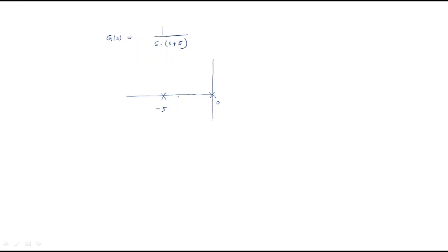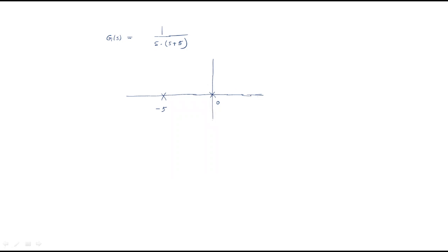We don't know where the root locus branch is going. On the right side of s = 0 there are no poles, so there is no RL branch. On the right side of s = -5 we have one pole, so an RL branch is available — but we don't know where this root locus is going.